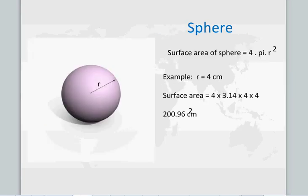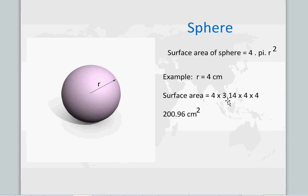Now if we look at the sphere, the surface area is given by the equation 4 pi r squared. That is a simple formula to remember. For example, if r equals 4 centimeters, then the surface area equals 4 times pi (3.14) times 4 times 4, which comes out to be 200.96 centimeters squared.